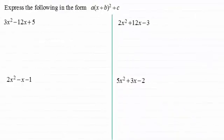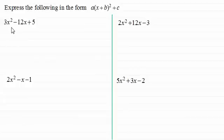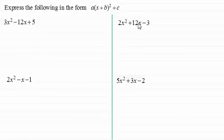Hi there. Welcome to the second video in my series on completing the square. I'm assuming that you have watched the first video and are familiar with how we square a bracket out. For this video, I'm going to be looking at where the first term is a positive x squared term and it's more than one. We've got four examples here and I'm going to take you through the first example and then encourage you to have a go at the last three.